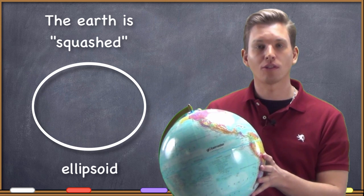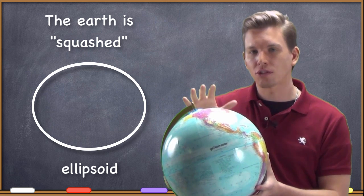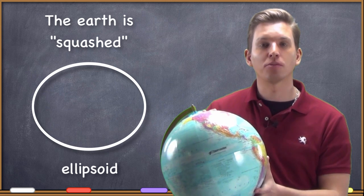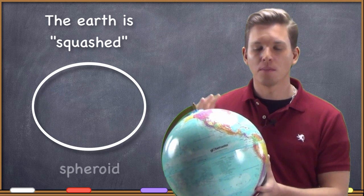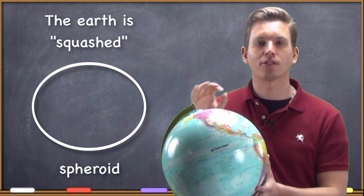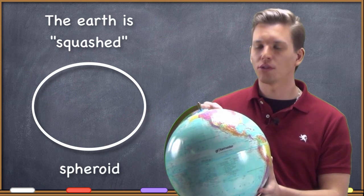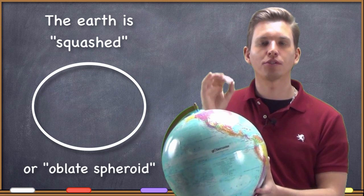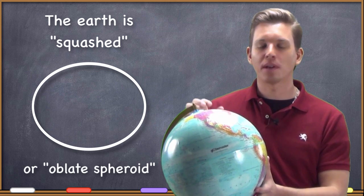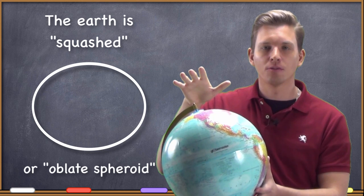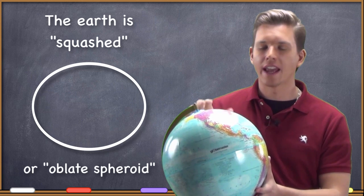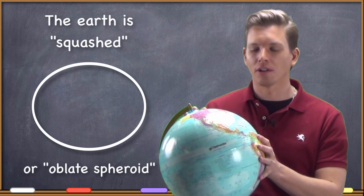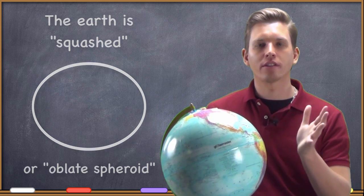You're going to base those measurements off of a little bit of a squashed sphere called an ellipsoid. Sometimes they call them a spheroid because it is so close to a sphere, it's almost a sphere. So sometimes you hear the term spheroid as well. But both spheroid and ellipsoid just means you've taken a sphere and squashed it a little bit. And now you have a little bit better representation about the shape of the Earth.